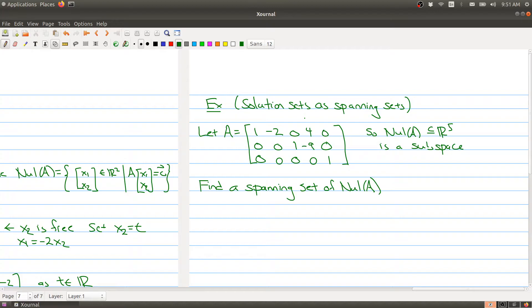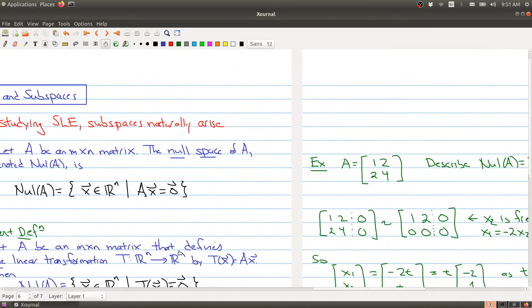I'm going to use this matrix as an example. I have a 3 by 5 matrix. What we know from the previous part of today's lecture is that the null space of this matrix is a subspace, and what we want to do is find a spanning set of this subspace. Let's quickly review what that means.